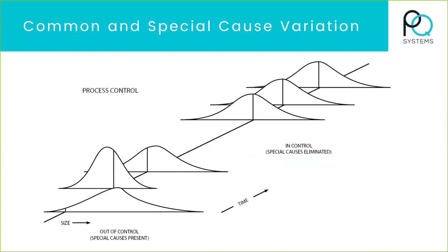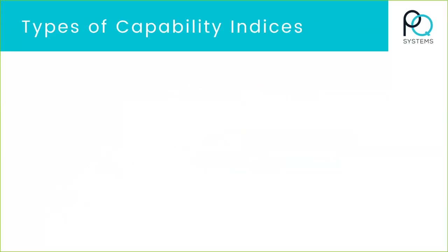You're going to move from the idea of an out-of-control process over to a more predictable system where everything is in control and predictable — where I can predict the next shape of that histogram the next hour. One of the prerequisites before you get to capability analysis is a process in control. So once you get there, then we can talk about capability analysis.